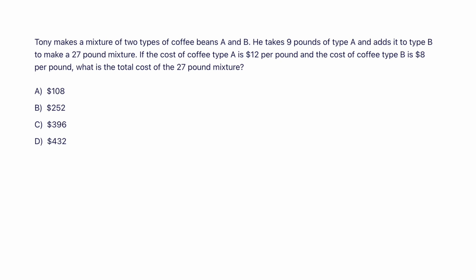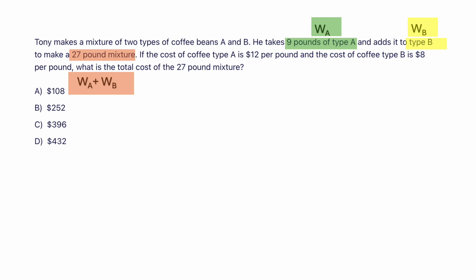Tony makes a mixture of two types of coffee beans: A and B. He has two types of coffee. The weight of type A is 9 pounds — I'll label that as WA. Type B's weight is unknown, so I'll call that WB, to make a 27-pound mixture. So WA + WB = 27 pounds. The cost of coffee type A is $12 per pound — label that CA. The cost of coffee type B is $8 per pound — label that CB.